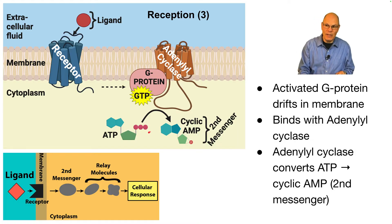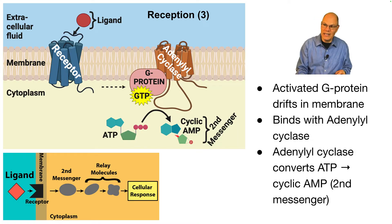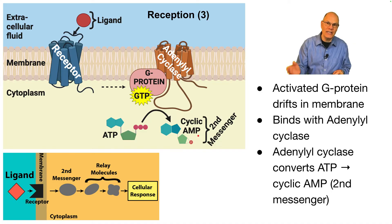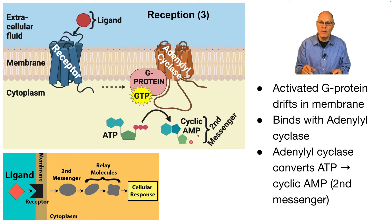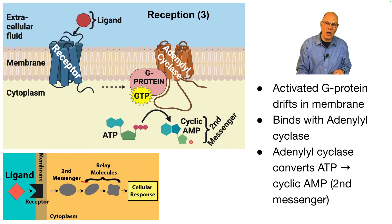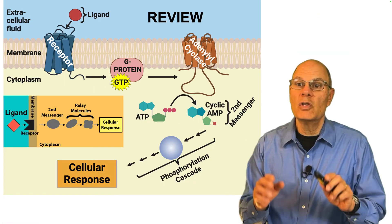Note that ATP is triply phosphorylated, while cyclic AMP only has one phosphate — AMP stands for adenosine mono, mono meaning one phosphate. What have we done? We've taken our initial messenger and transduced it, creating the second messenger.